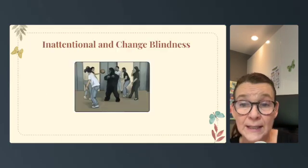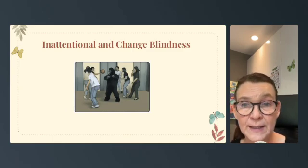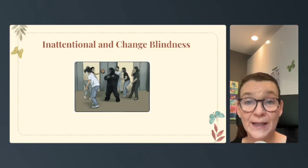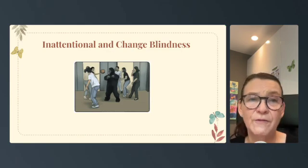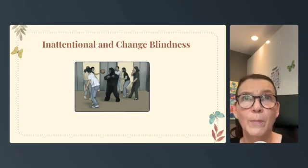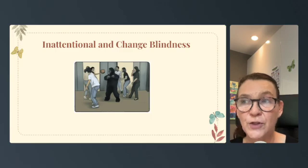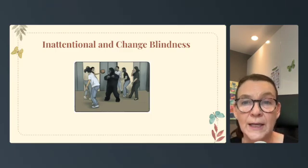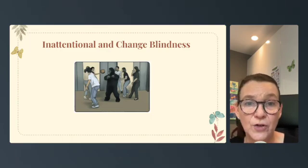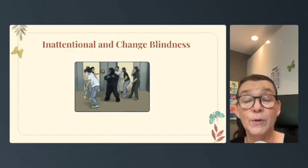Now let's look at inattentional blindness — missing visible objects when attention is directed somewhere else. For example, failing to see the gorilla in the famous basketball passing video. This is a very popular video that many psychology teachers show in class — people are passing the ball and a gorilla appears and nobody notices. That leads to change blindness: failing to notice changes in your environment, such as not noticing when the person you're talking to has been replaced by another.